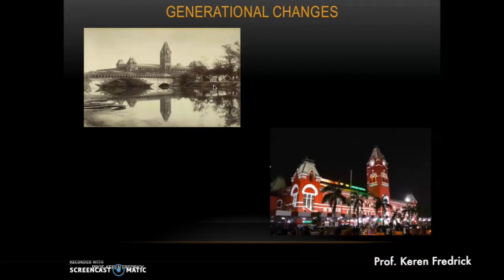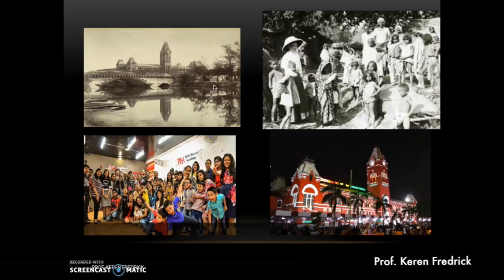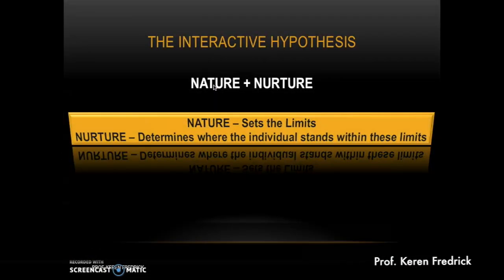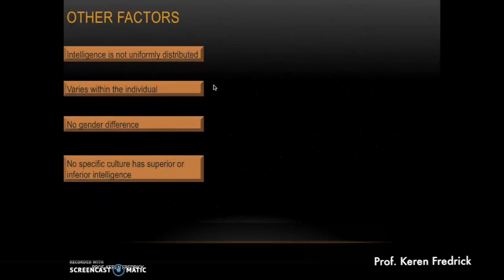Generational changes — technological advances and industrialization — have also impacted and broadened intelligence over the years. The interactive hypothesis ultimately concludes that it is neither nature alone nor nurture alone, but both together that determine intelligence. Nature sets the limits — you are born with genes that set your potential ceiling for intelligence — while nurture determines where the individual stands within those limits, either enhancing or further limiting those genetic capacities depending on the environment.